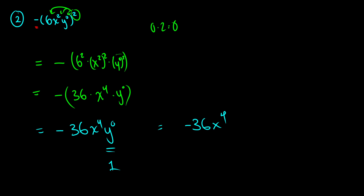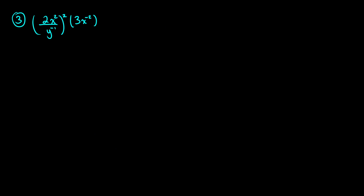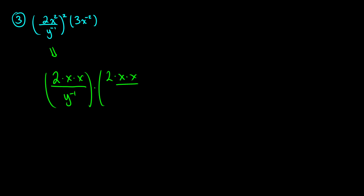Let's do one more, which is a bit more complicated: 2x squared over y to the negative 1, squared, multiplied by 3x to the negative 2. I'll write everything out in full. That's 2 times x times x times y to the negative 1, squared — meaning multiplied by itself. Then multiplying by 3 times x to the negative 1 times x to the negative 1, which equals x to the negative 2.